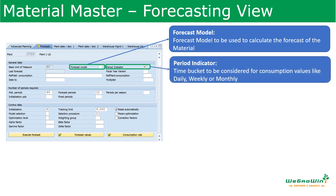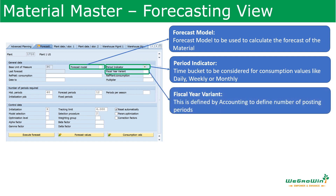The period indicator field specifies the time period for which the consumption values are used for forecasting. The normal period will be a month, which is taken as the default — if you leave it blank, the system will take it as a month. Or it may be daily or weekly. Then the fiscal year variant is an accounting-defined field that describes the variant for the fiscal year — that is, the number of posting periods. The fiscal year variant has to be configured using transaction OB37, and this is done by the finance team.